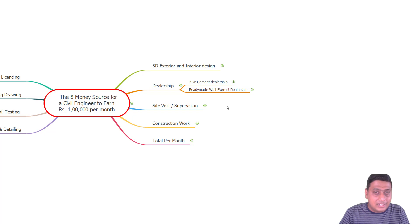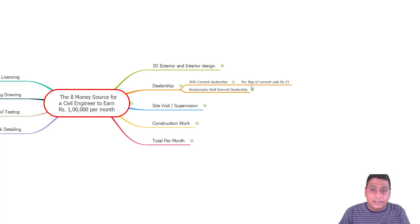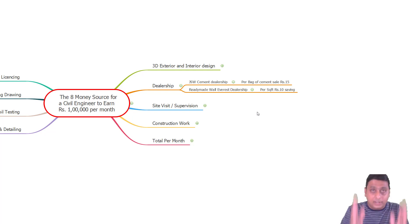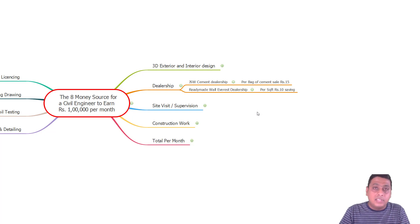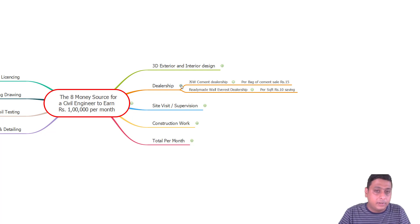We also have dealerships — for cement, we have DSGD Cement dealership, and for readymade walls, we have Everest dealership. For cement, selling 500 bags per month earns about 7500 rupees. For readymade wall panels, at 10 rupees per square foot saving, installing 1000 square feet gives 10,000 rupees per month.